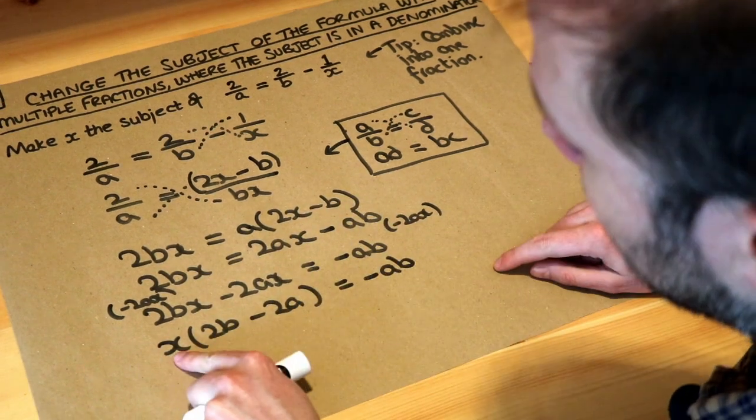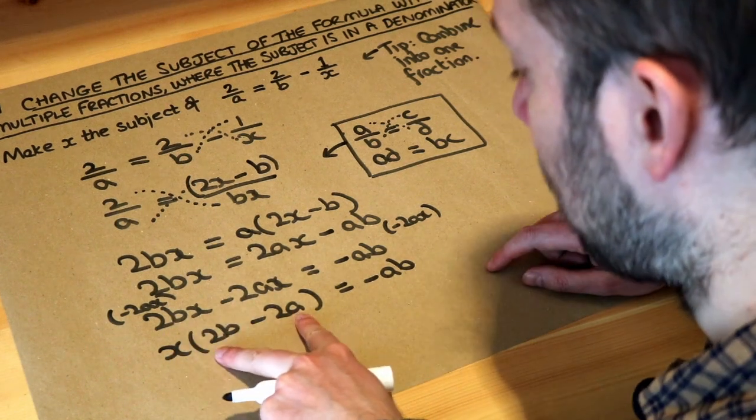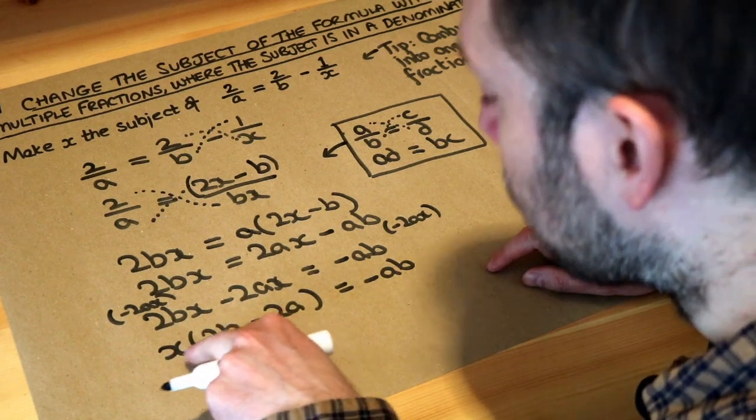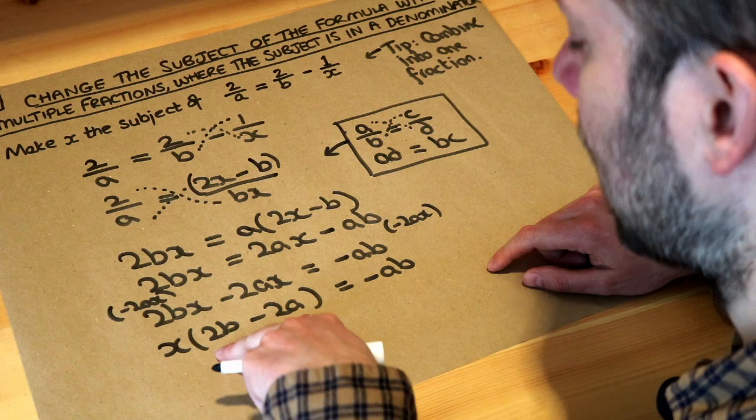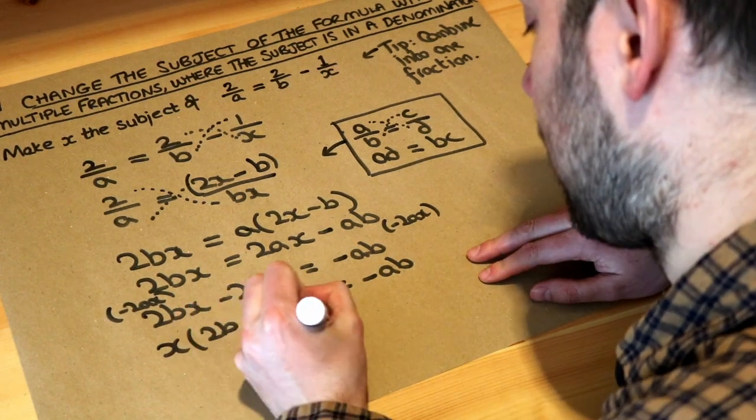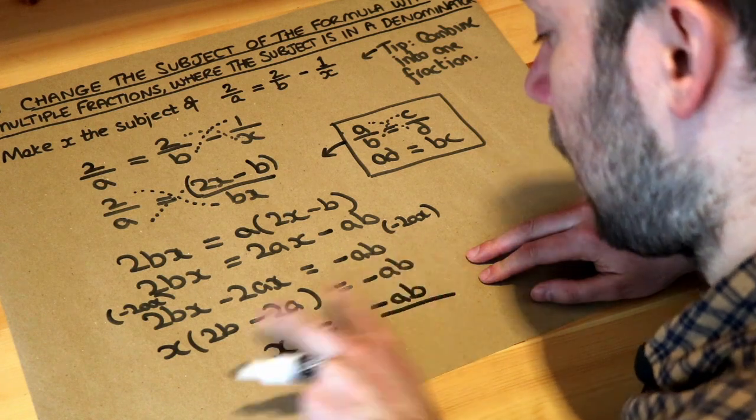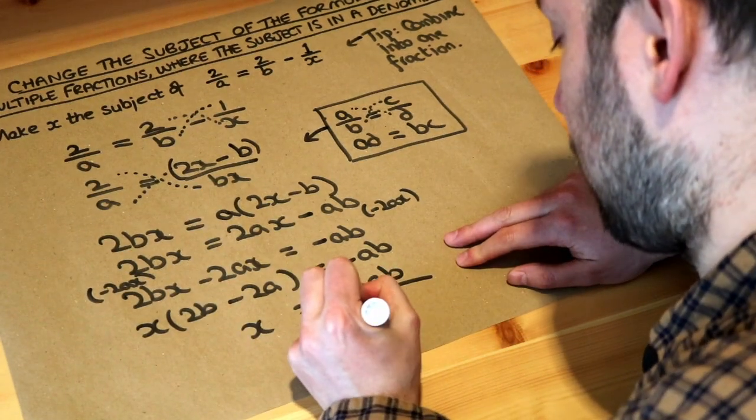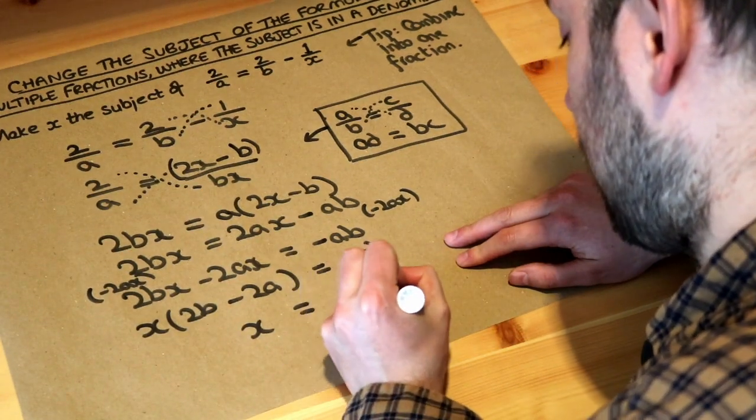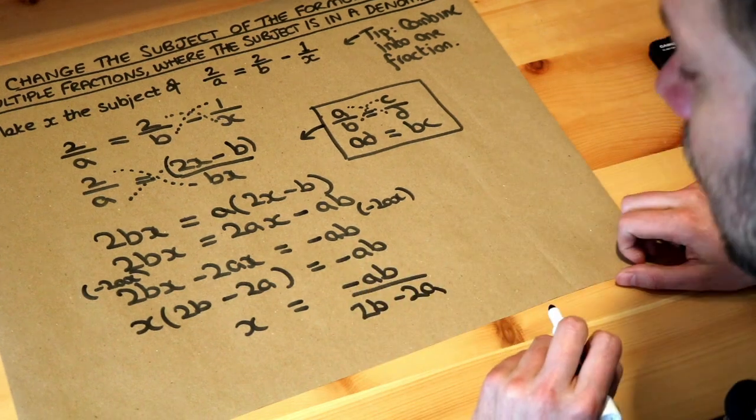And then finally, because the x is on its own and it's been multiplied by 2b minus 2a, we can get rid of that times by 2b minus 2a by just dividing by that whole bracket. So we get x equals minus ab over this whole bracket here. But we don't need the brackets anymore because there's nothing around it like that. And that is the final answer.